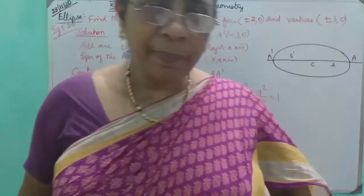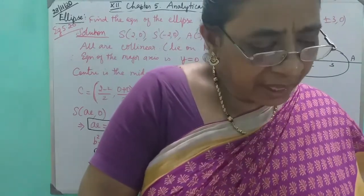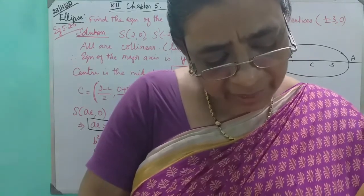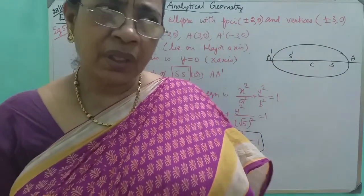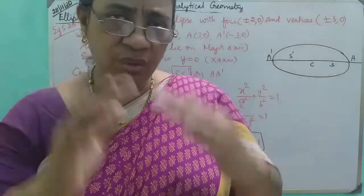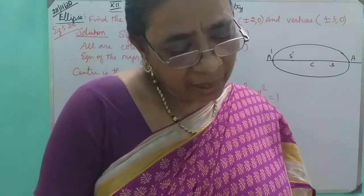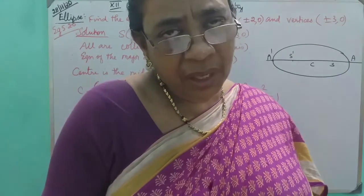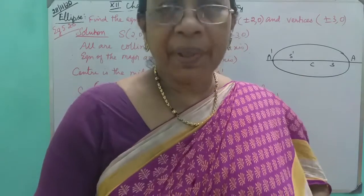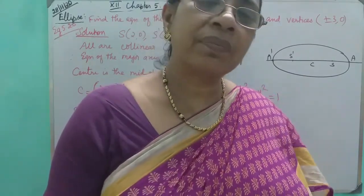Hello Students. Example 5.20: Find the equation of the ellipse with foci at plus or minus 2, 0 and vertices at plus or minus 3, 0. The foci are on the x-axis at plus or minus 2, 0 and the vertices are at plus or minus 3, 0.